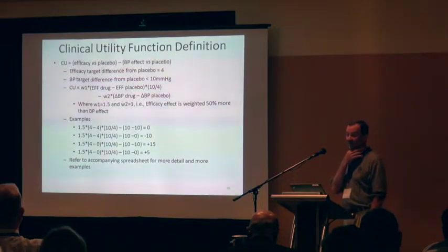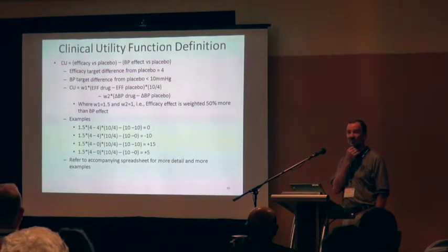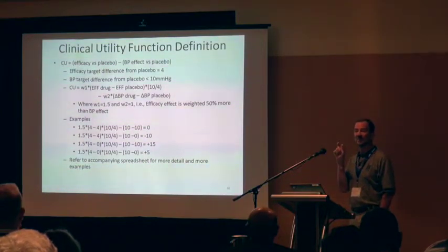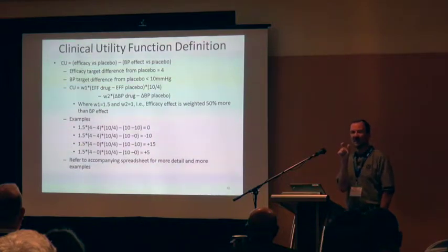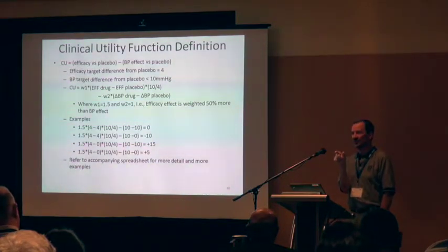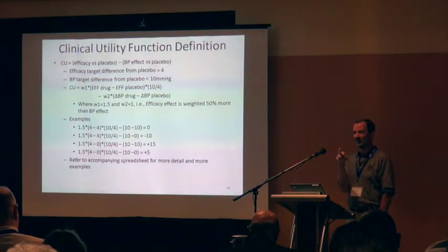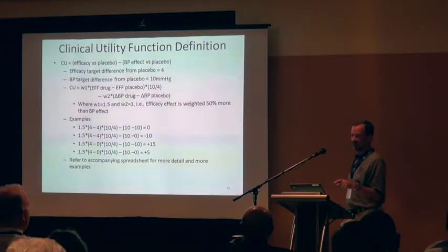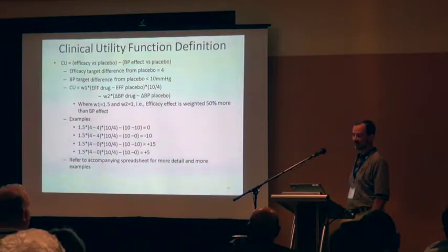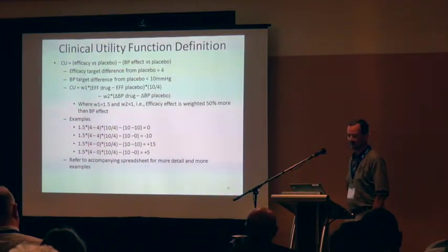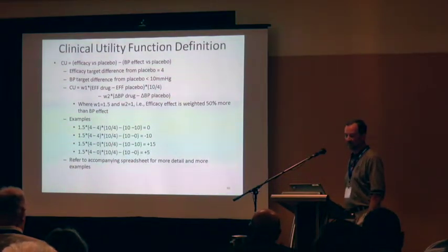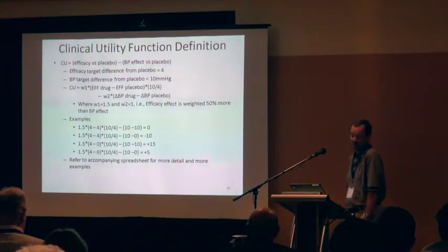In this case, we had a continuous efficacy response and a continuous tolerability response. Rather than basing utility on proportions of subjects with AEs — which can't give a nice utility value on an individual patient basis since the safety observation is either a zero or a one — we can define a clinical utility value for each subject based on their efficacy response and blood pressure response. Instead of placebo, we can use baseline.